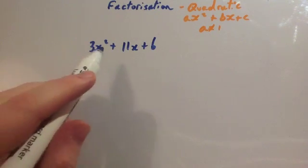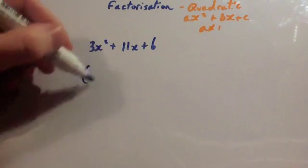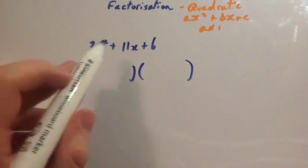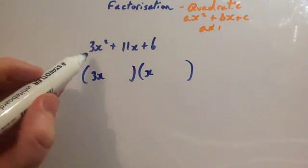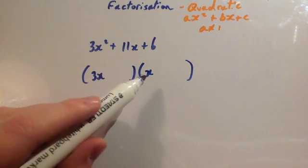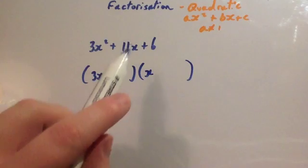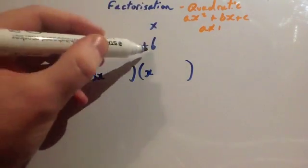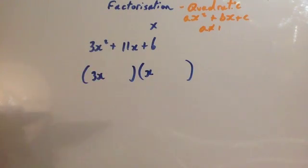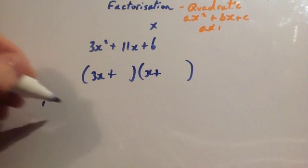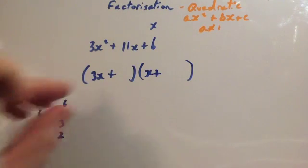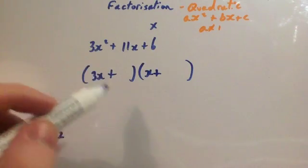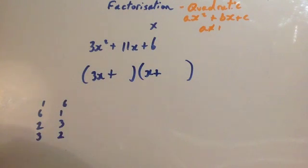Here we've got another quadratic to factorize: 3x squared plus 11x plus 6. Put your two brackets down. This is quite nice because it's 3x squared — whenever it's a prime number coefficient it's nice, so 3x squared would have to be a 3x and an x. If it was 4x squared you could have 4x and x, or 2x and 2x. The two numbers on the end will times together to give you 6. Because you've got a plus and a plus, it's going to be two positives. So the pairs that times to give you 6 are: 1 and 6, 6 and 1, 2 and 3, or 3 and 2. One of these pairs, when expanded using FOIL, will give 3x squared plus 11x plus 6.